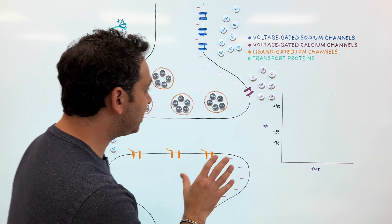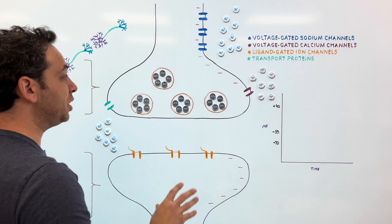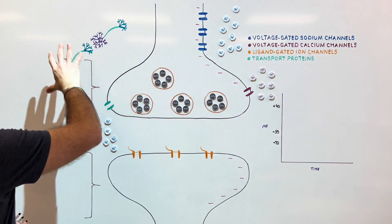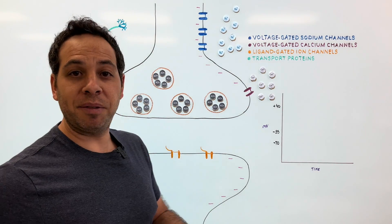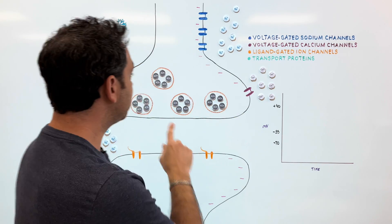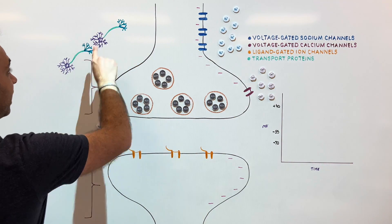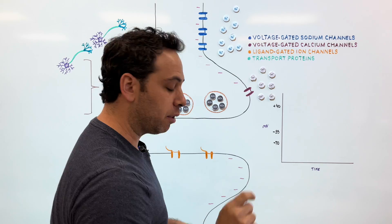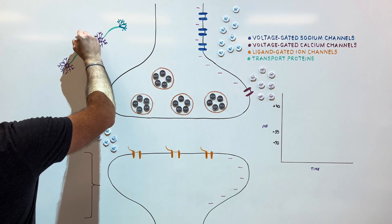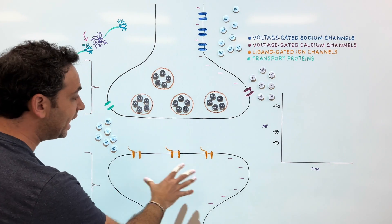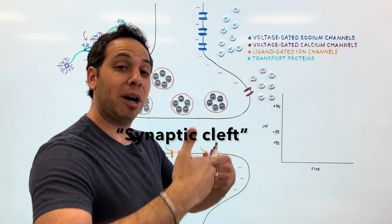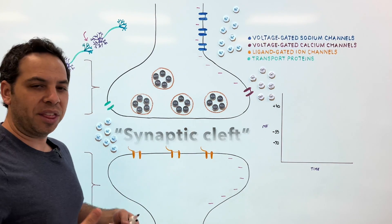Before we go over the process of synaptic transmission, let's first understand what parts we are looking at. Up here I have two neurons, and neurons are typically made up of the same parts. We have our dendrites — think about little tree branches — our soma, our cell body, and then the axon, which takes the signal away from the soma. You'll notice there's a tiny space in between them where the message is going to travel over and communicate with the next neuron.